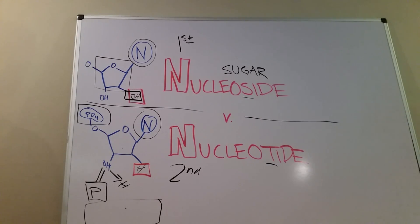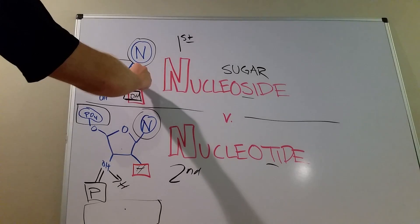Now, adenine, simple A, you recognize as one of our purines. That's just nitrogenous base. Once we add on our ribose sugar, now we have adenosine.